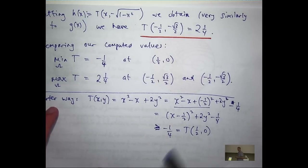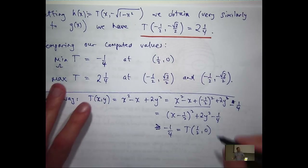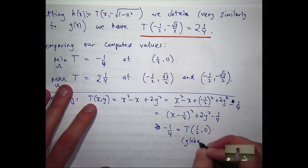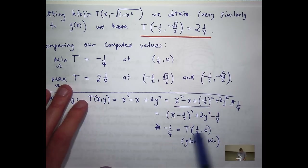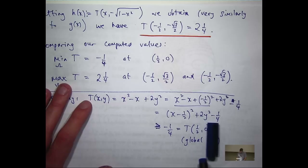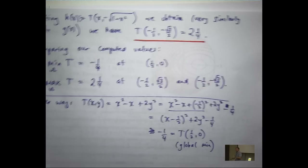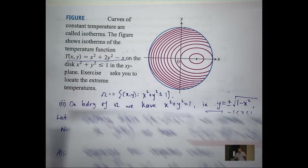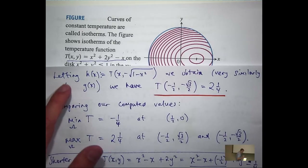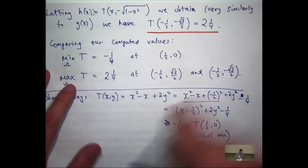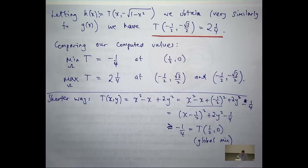This must be, by definition, not only a local minimum but a global minimum — it's got to be a minimum for all x and y. So we know, as long as this point is in our plate, the minimum temperature must be minus one quarter at x equals one half, y equals zero. Getting back to symmetry: with our temperature function, if I replace y with minus y, does it change the temperature at all? No, because you're squaring it.